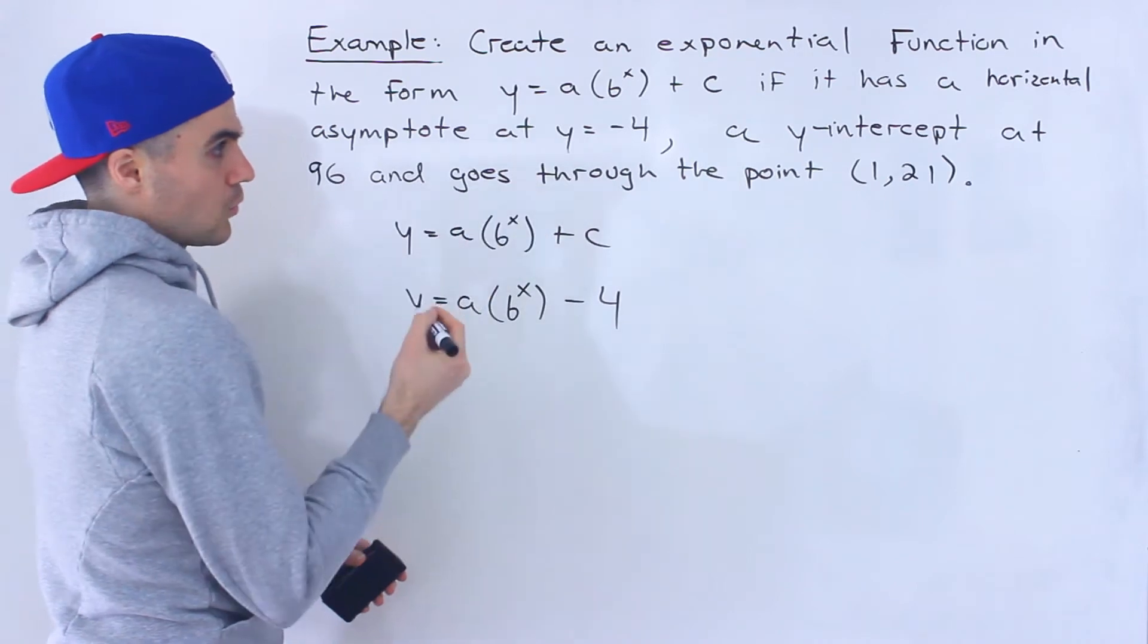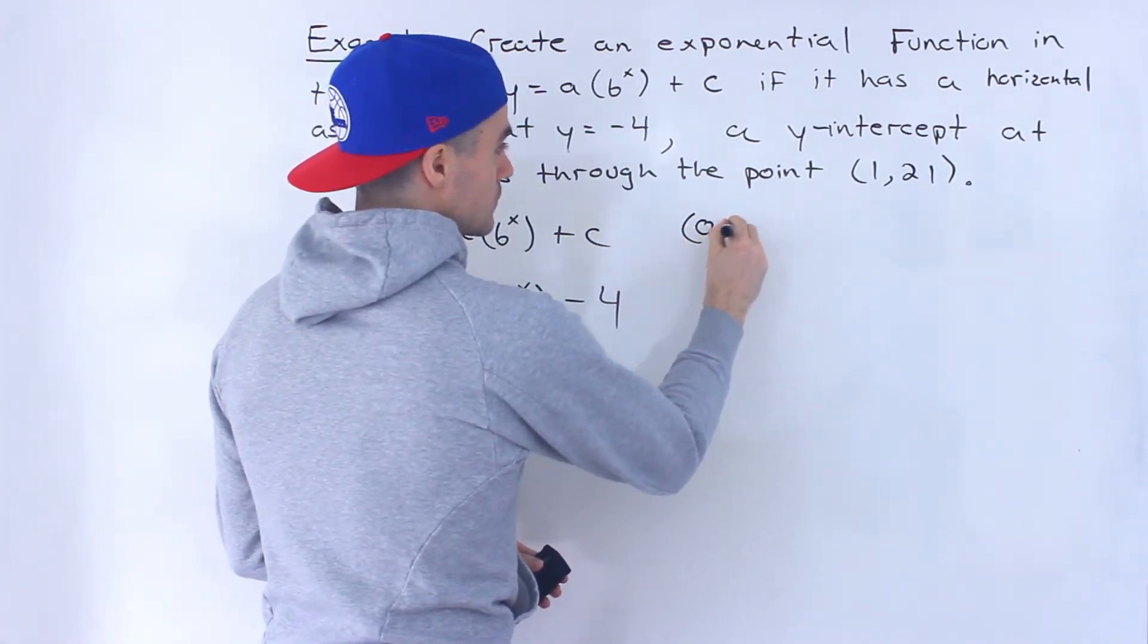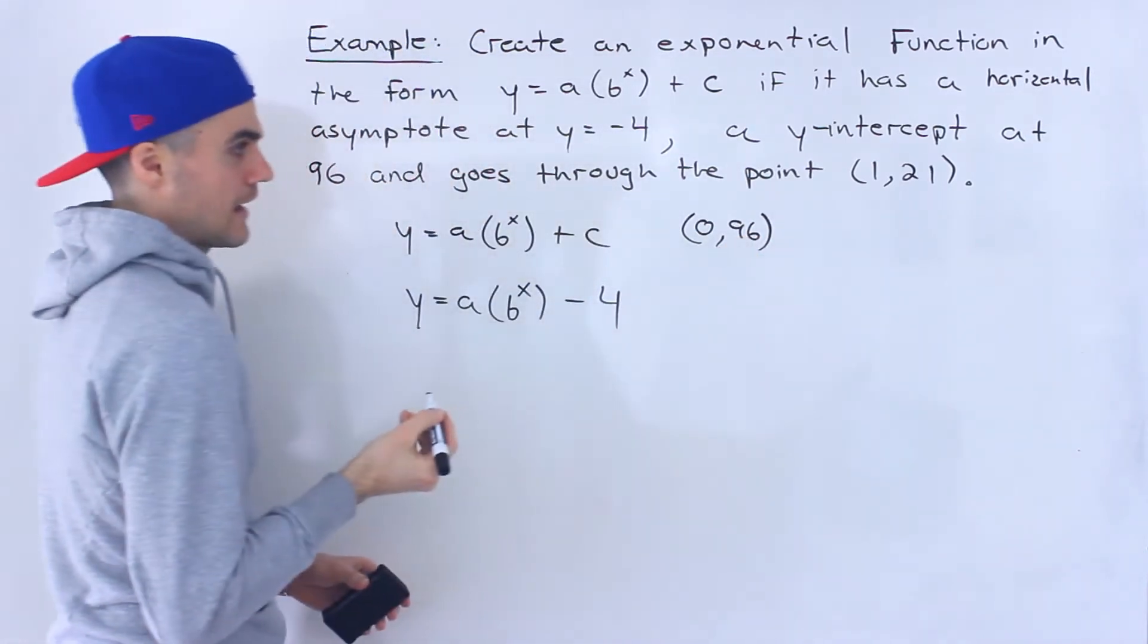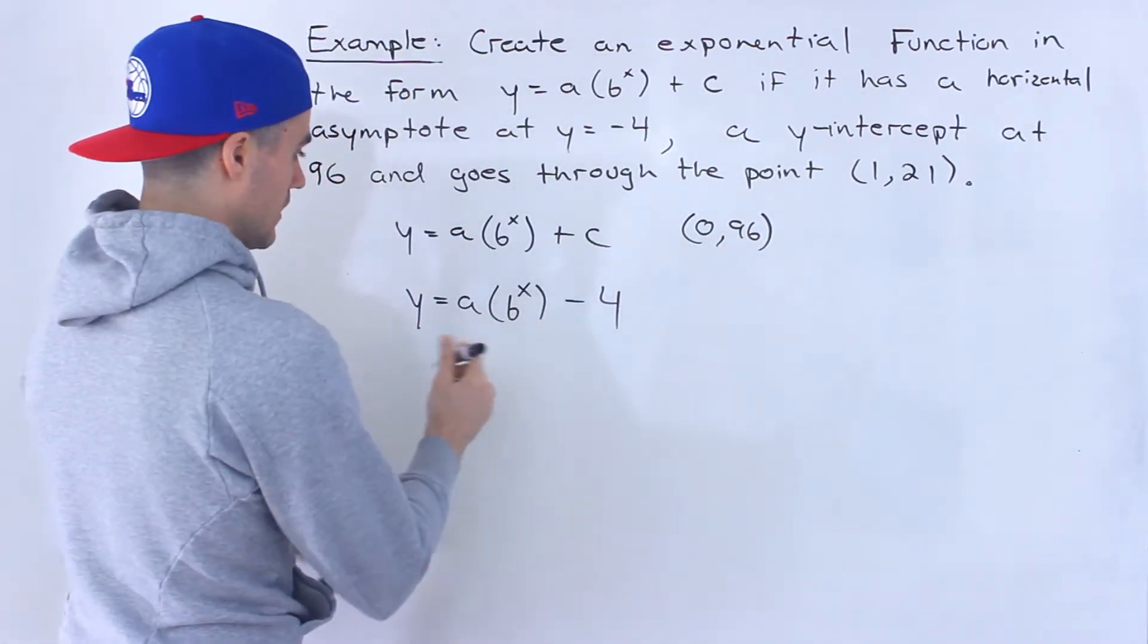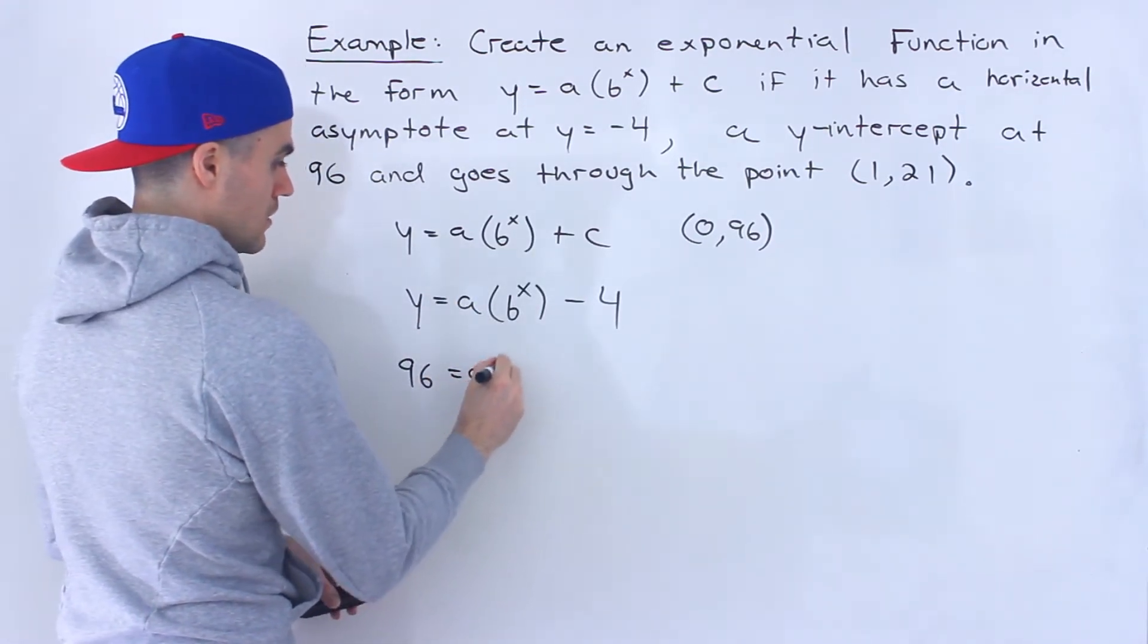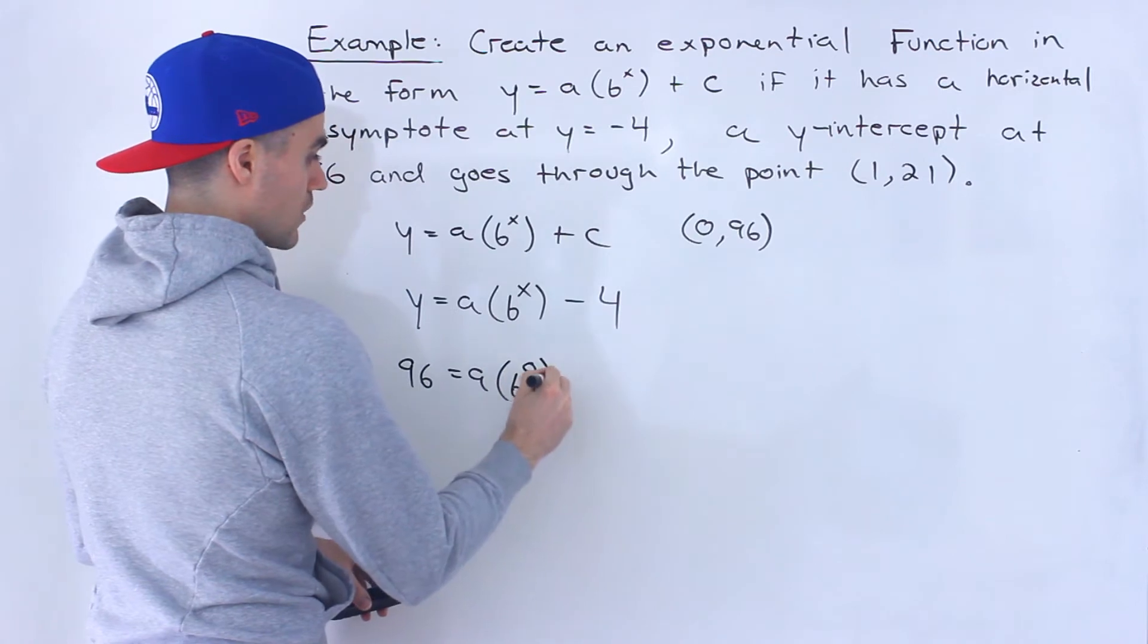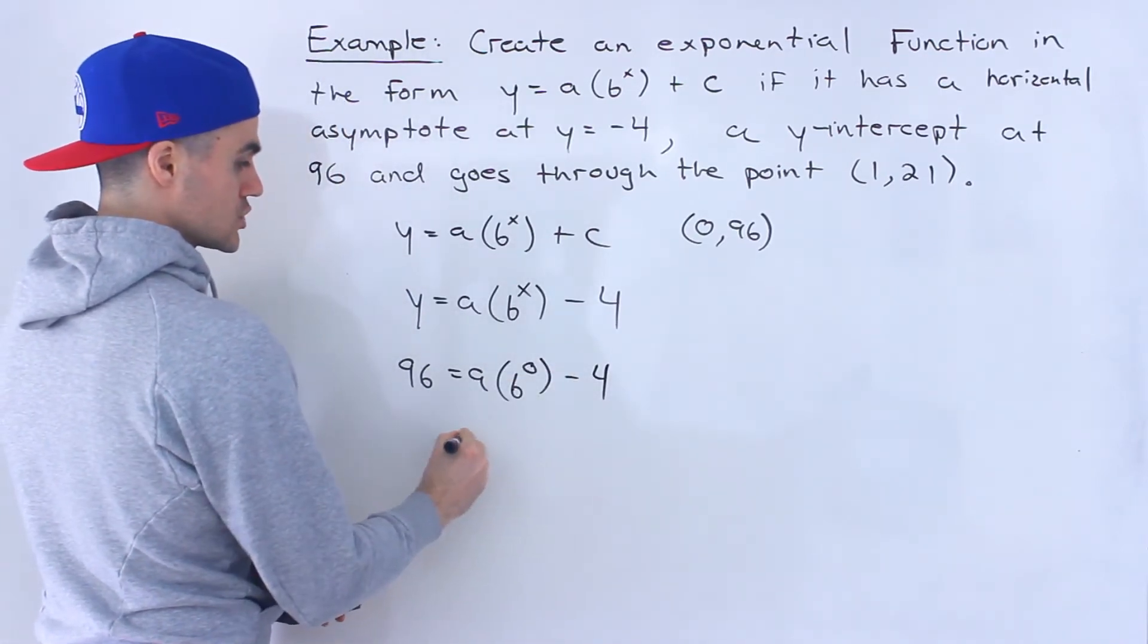And then the next one, the y-intercept at 96, means it has a coordinate at (0, 96). So what we can do is plug in this coordinate here and watch what happens. We plug in 96 for y, we plug in 0 for x, and then we'd have minus 4. Now, b to the power of 0 is just 1.